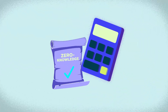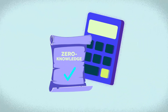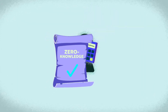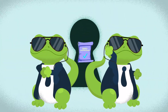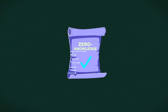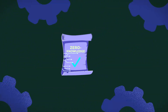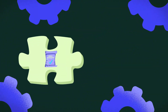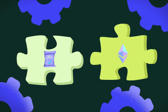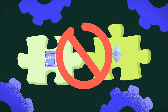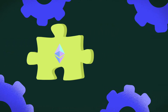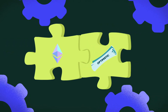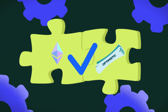Also, since ZK rollups use zero-knowledge proofs to verify transactions, they offer improved security and privacy, but are much more complex than optimistic rollups. This complexity affects how flexible and compatible they are with Ethereum, as smart contract capabilities are more challenging to implement with ZK rollups compared to optimistic rollups.